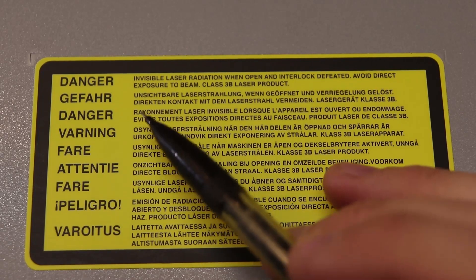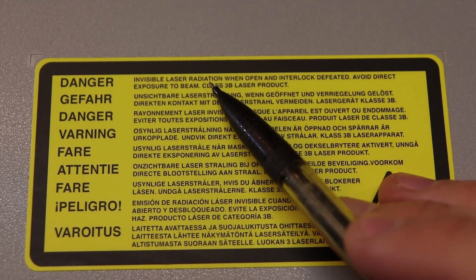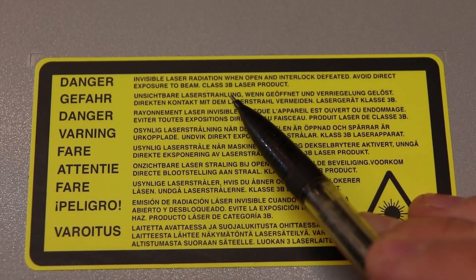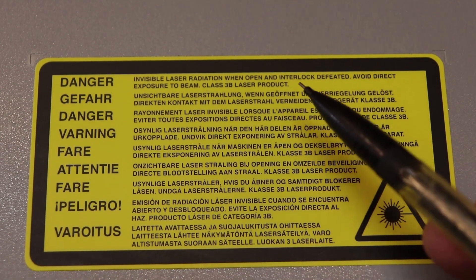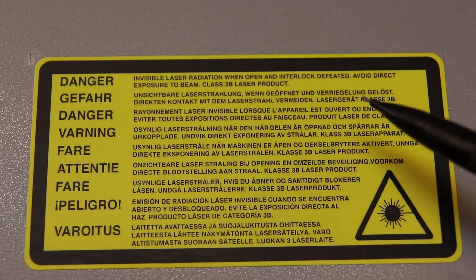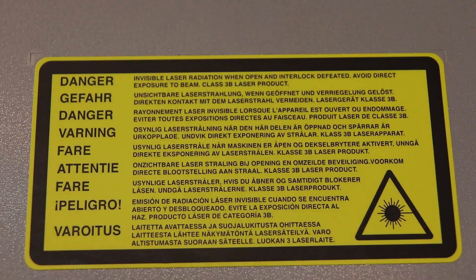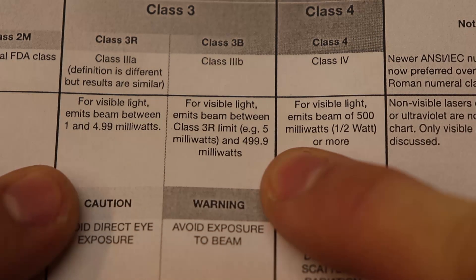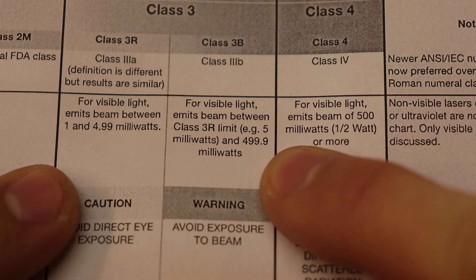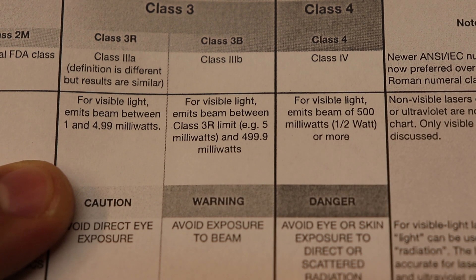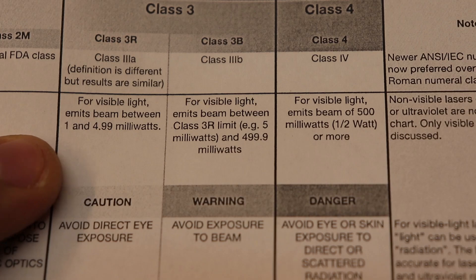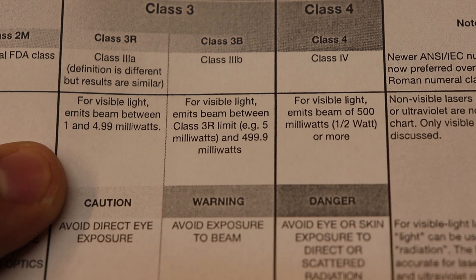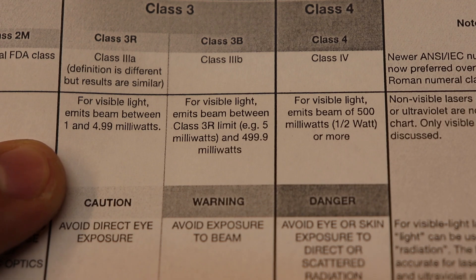Now here it says invisible laser radiation and class 3b laser product. So we may be looking at an infrared laser here, and a class 3b laser is any laser that's between 5 and 500 milliwatts. Now I've seen some laser engravers on eBay you can buy and they have a 500 milliwatt laser that they advertise. So that should give you some idea of what kind of laser we're working with.